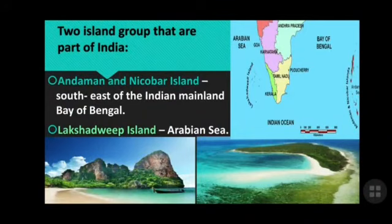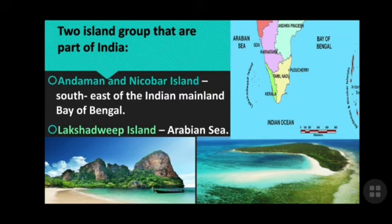The last physical division covers islands. India has two important island groups: the Andaman and Nicobar Islands, located to the southeast of the Indian mainland in the Bay of Bengal, and the Lakshadweep Islands, which lie towards the Arabian Sea. These are the six major physical divisions of India that we have covered in this chapter.